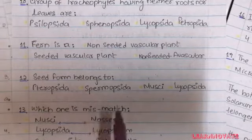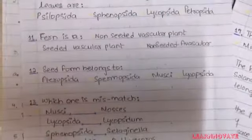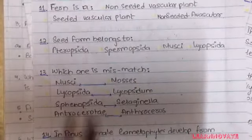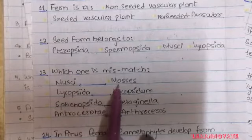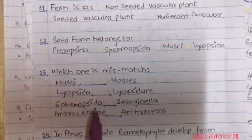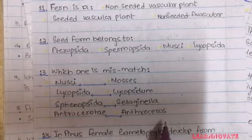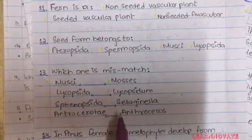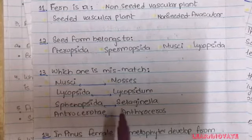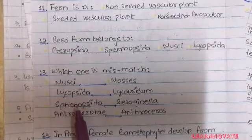Question 13: Which of the following is a mismatch? A. Musci — example: Mosses, B. Lycoopsida — example: Lycopodium, C. Sphenopsida — example: Selaginella, D. Anthocerotae — example: Anthoceros. Knowing the correct examples, we can identify that option C — Sphenopsida with Selaginella — is an inappropriate match. So the answer for question 13 is option C.